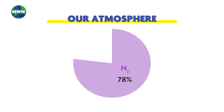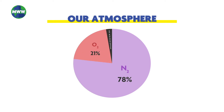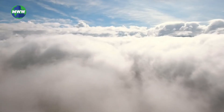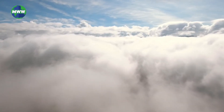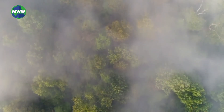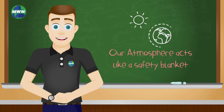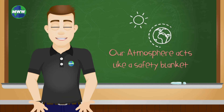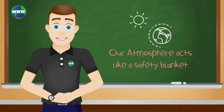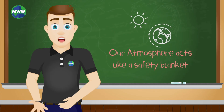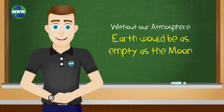Now our atmosphere contains about 78% nitrogen, 21% oxygen, and less than 1% contains carbon dioxide and other trace gases. Water vapor in our atmosphere can be seen as clouds or sometimes fog near the ground. Overall, our atmosphere is like a safety blanket over our planet, providing a great deal of protection from harmful radiation from the sun, and it keeps temperatures comfortable — not too hot and not too cold. Without our atmosphere, Earth would be as empty as the moon.